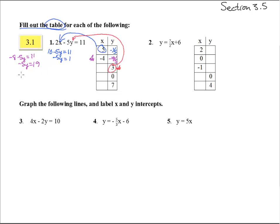So we have 2x minus 15 equals 11. Add 15 to both sides and we get 2x equals 26. Divide by 2 and we get x equals 13.